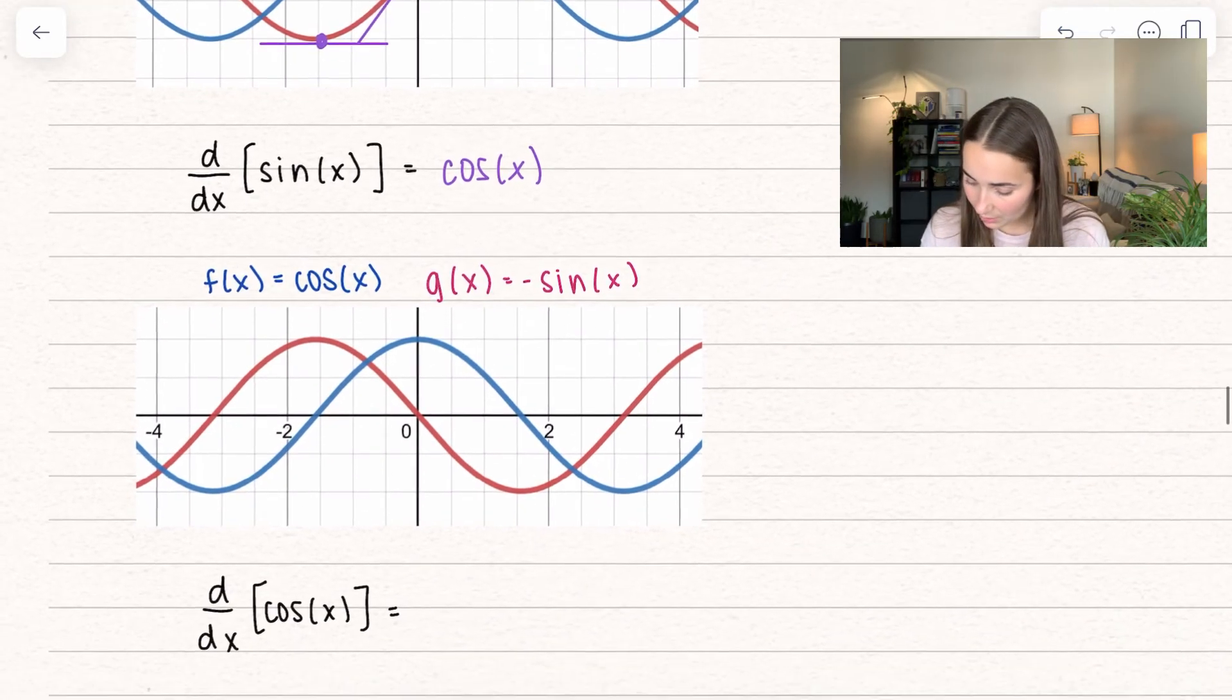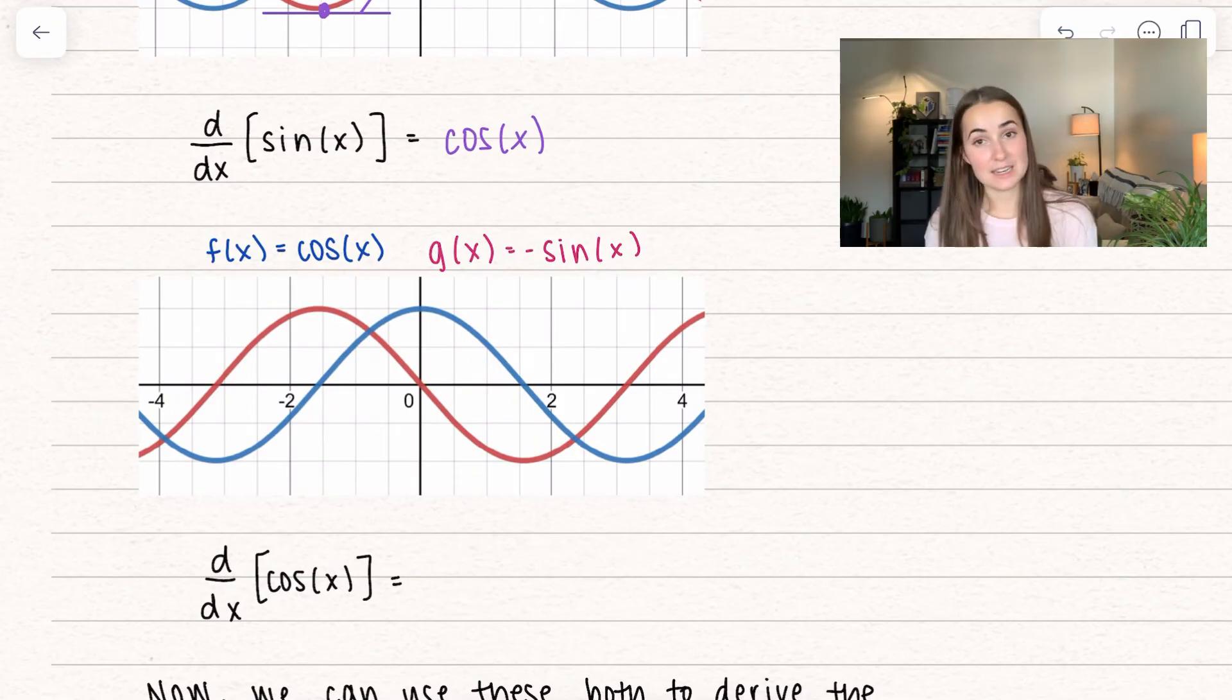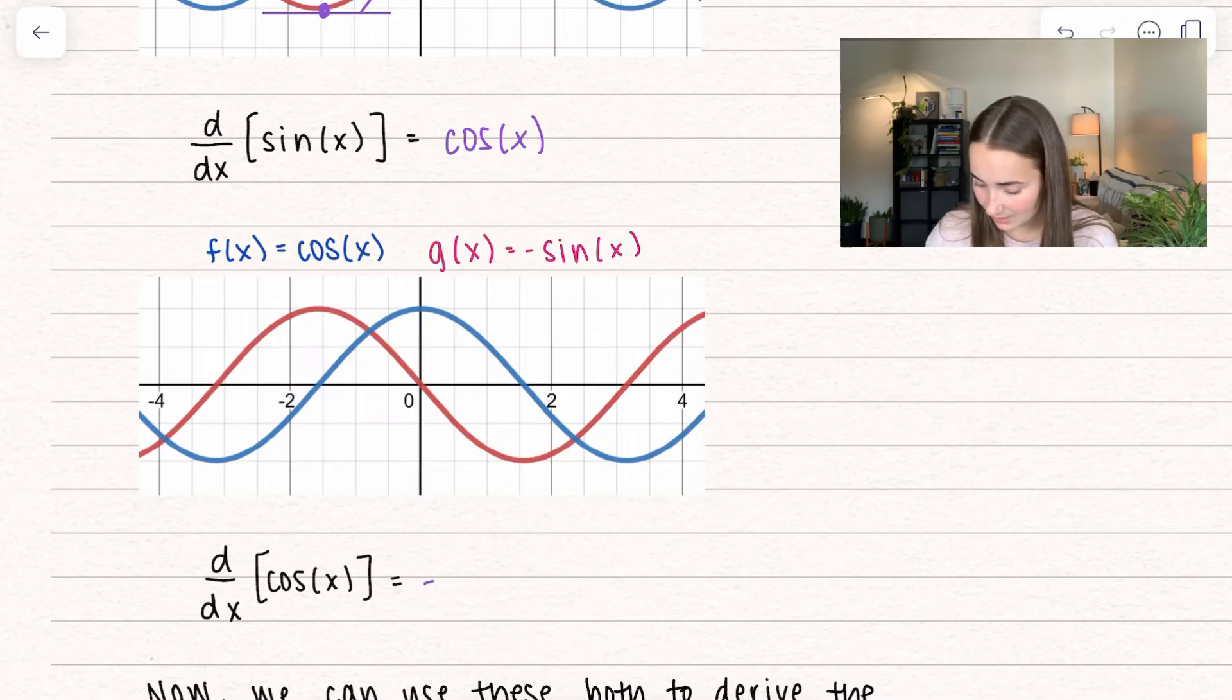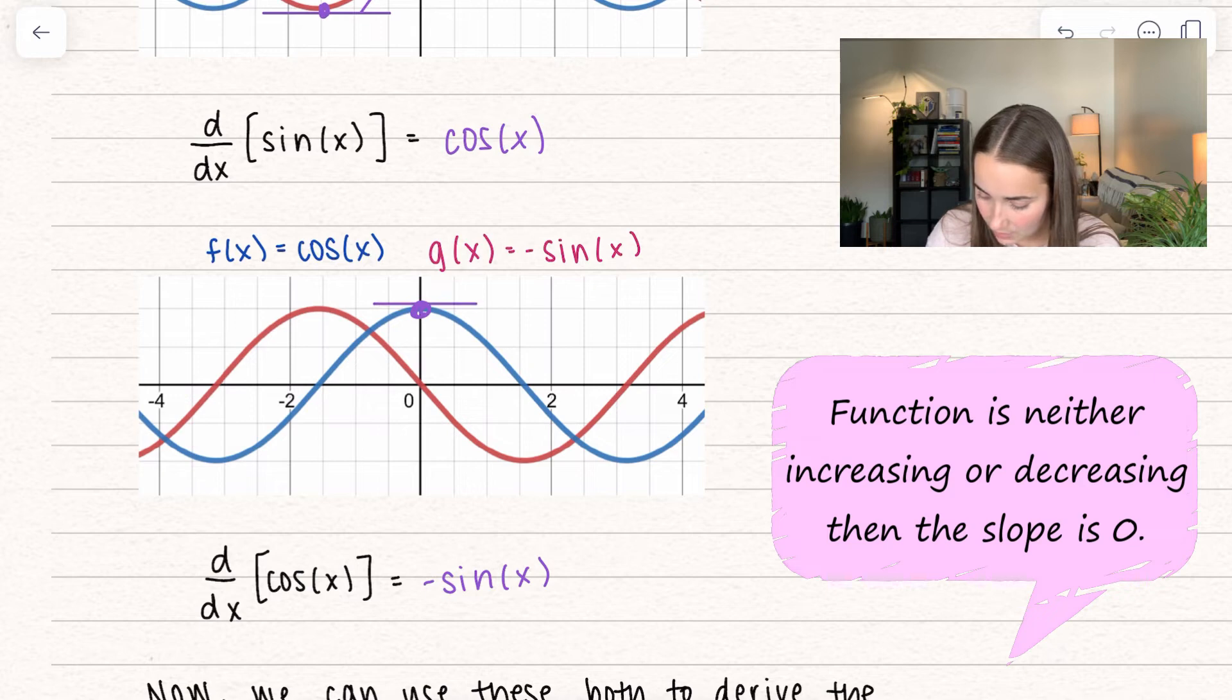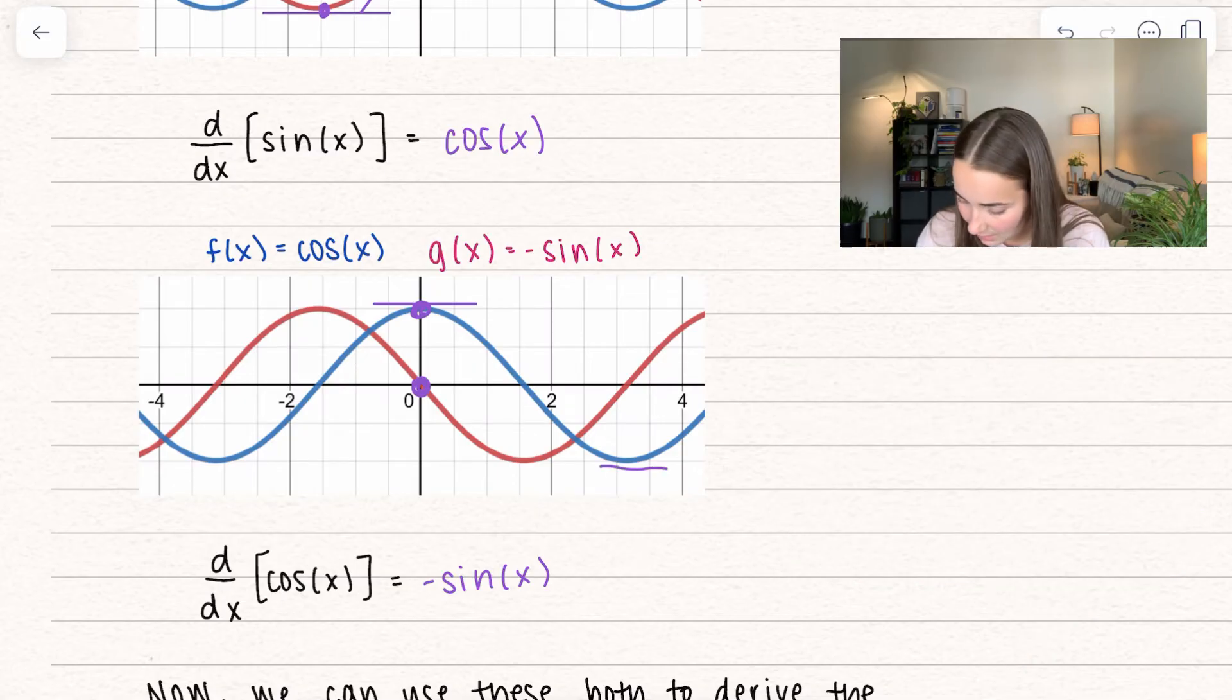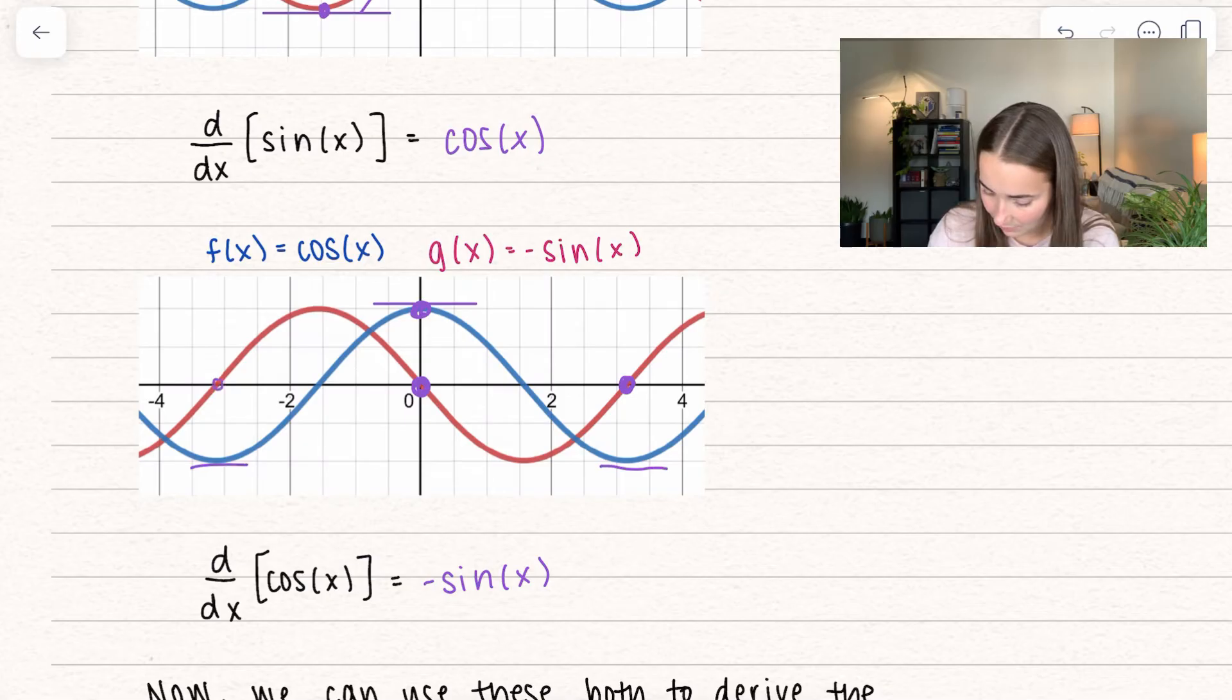We want to talk about what is the derivative of cosine of x. For very similar reasons, it's actually going to be negative sine of x. Let's look at our graph. Cosine of x is in blue. When our function is not changing at all, it has a slope of 0, then our negative sine of x is actually equal to 0. We have a value of 0 at these points.